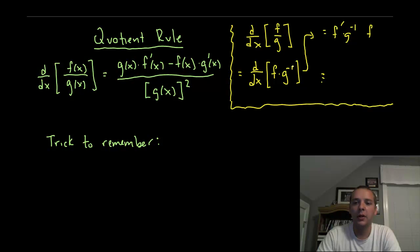This would bring the negative one down, g to the negative two, and then by the chain rule, the derivative of the inside would be g prime.